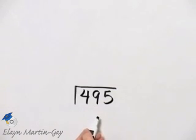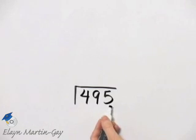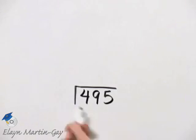It makes no difference, though. You may automatically see that five is a factor of 495 and start there.